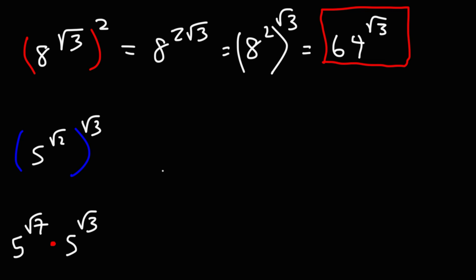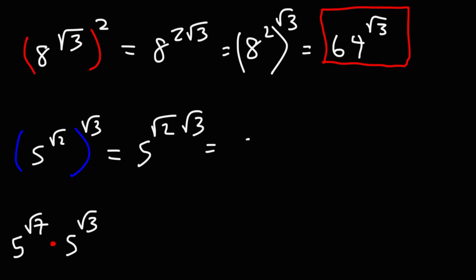For 5^√2 raised to √3: we have an exponent raised to another exponent, so we can multiply them. This gives 5 raised to √2 times √3. Because these square roots have the same index number — an invisible 2 — we can multiply what's inside: 2 times 3 is 6. So the final answer is 5^√6.